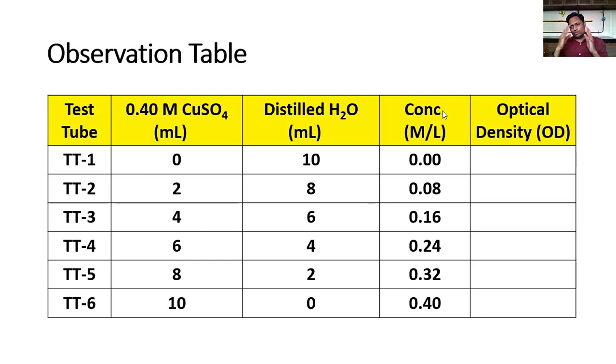The concentration of copper sulfate is going on increasing as the number of test tubes is increasing. The concentration is 0.00, 0.08, 0.16, 0.24, 0.32 and 0.40. Correspondingly, you have to measure the optical density and note it down.